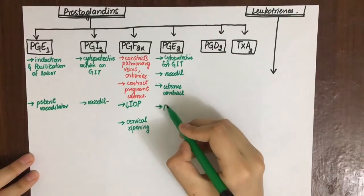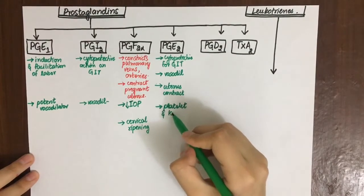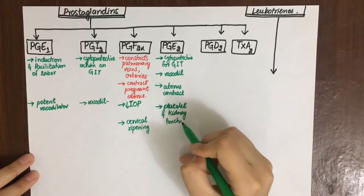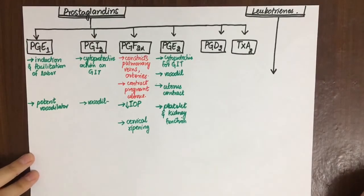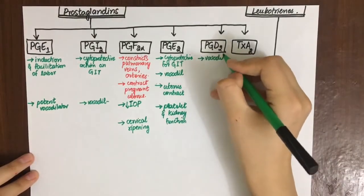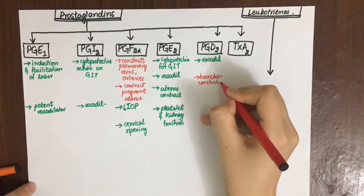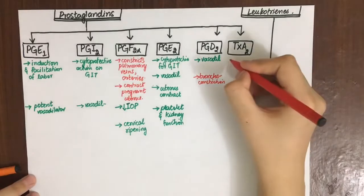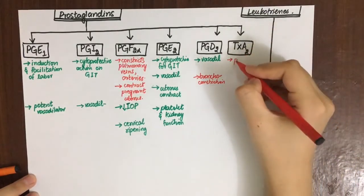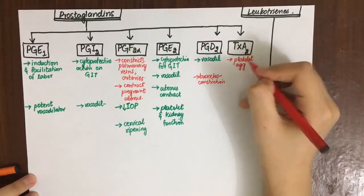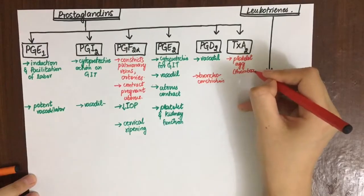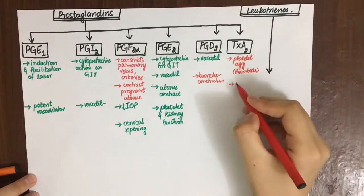PGD2's good effect is vasodilation, and the bad effect is bronchoconstriction. Thromboxane A2's bad function is platelet aggregation, thrombosis, and vasoconstriction.